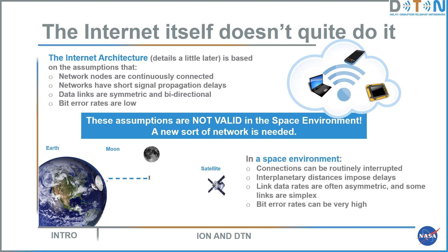In the space environment, connections can be routinely interrupted — it's normal for end-to-end communications to be interrupted for minutes, hours, or sometimes days. Interplanetary distances impose very long delays that make it difficult to operate internet protocols, which expect very short round-trip times. There are asymmetric link data rates; some links are even simplex, not bidirectional. At some parts of operational cycles, spacecraft may only be able to send and not receive, and bit error rates can be very high.